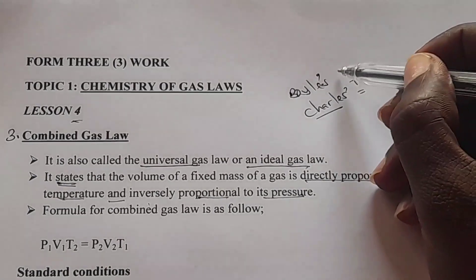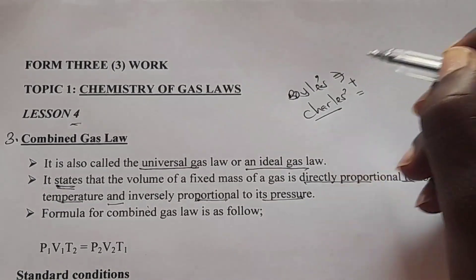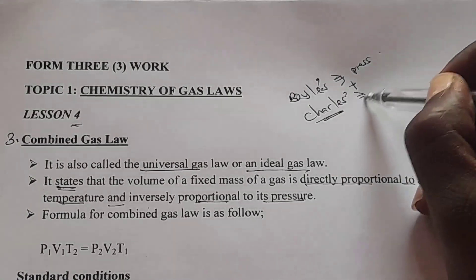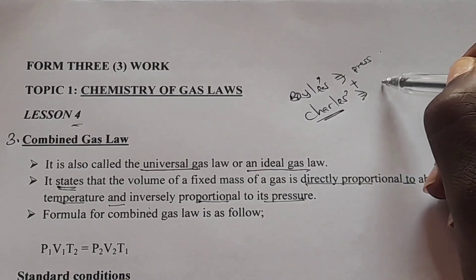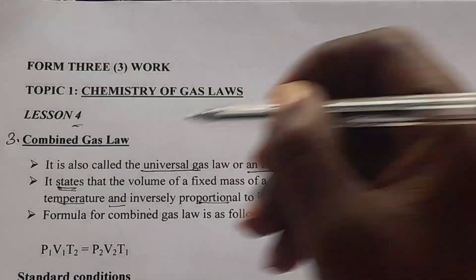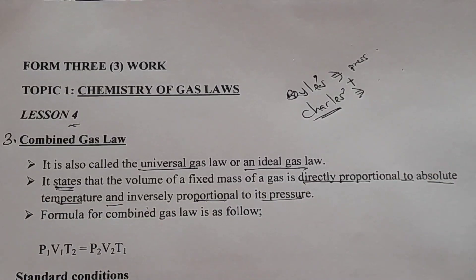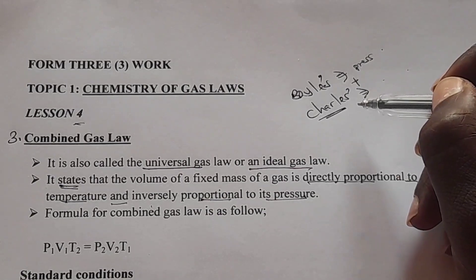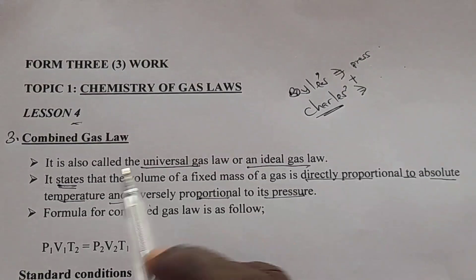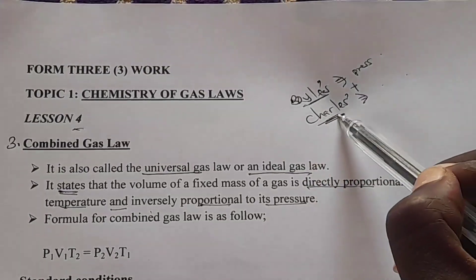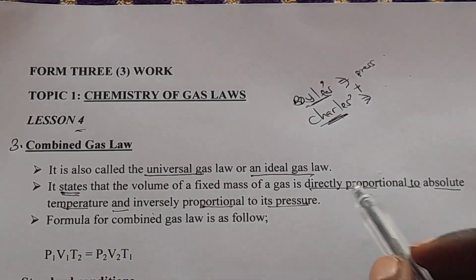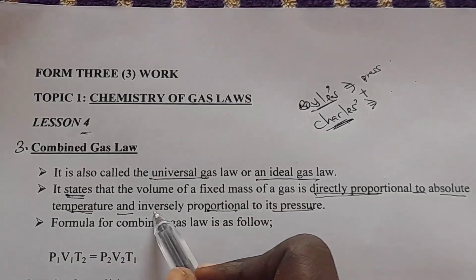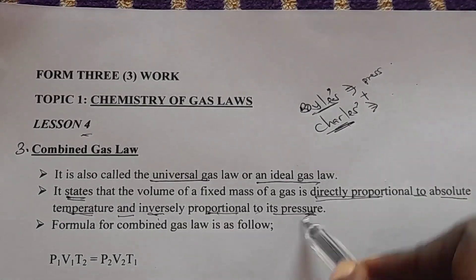Remember, Boyle's law states the volume of a fixed mass of a gas is inversely proportional to its pressure at constant temperature. In Charles's law, it is directly proportional to its absolute temperature at constant pressure. So in combined gas law, there is no constant — all three are variables: volume, absolute temperature, and pressure. It states that the volume of a fixed mass of a gas is directly proportional to its absolute temperature (Charles's law) and inversely proportional to its pressure (Boyle's law).